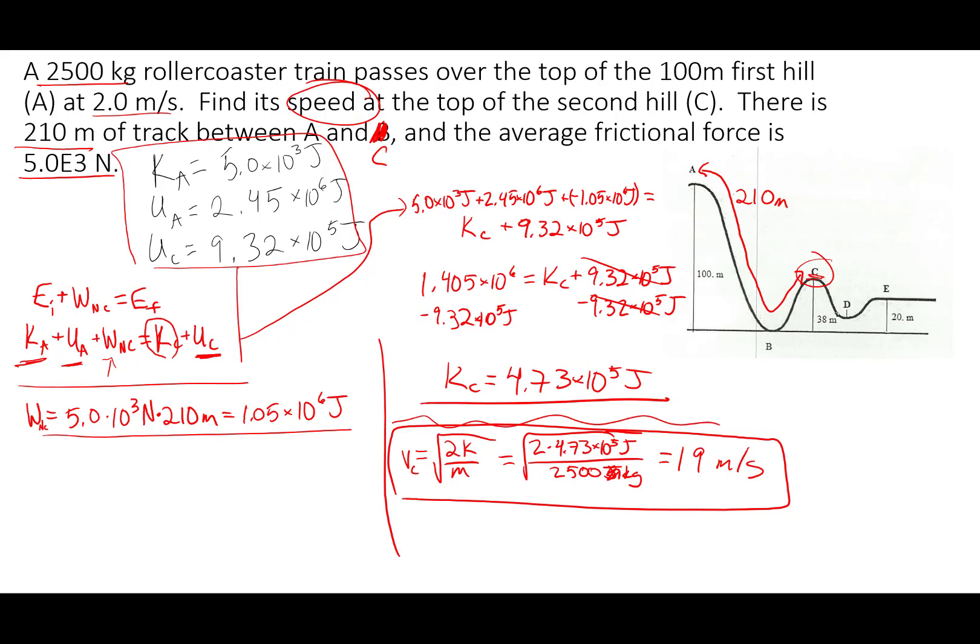This is how we use conservation of energy to solve problems. Recap: we account for all the energies, we account for the non-conservative work, we find our unknown energies, and we use that unknown energy to solve for whatever else we need. That's all — I hope that was helpful. Bye.